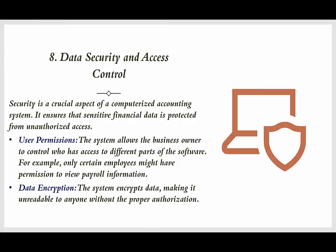Security and Access Control: Security is a crucial aspect of a computerized accounting system. It ensures that sensitive financial data is protected from unauthorized access. The system allows the business owner to control who has access to different parts of the software — for example, only certain employees might have permission to view payroll information. The system also encrypts data, making it unreadable to anyone without the proper authorization.